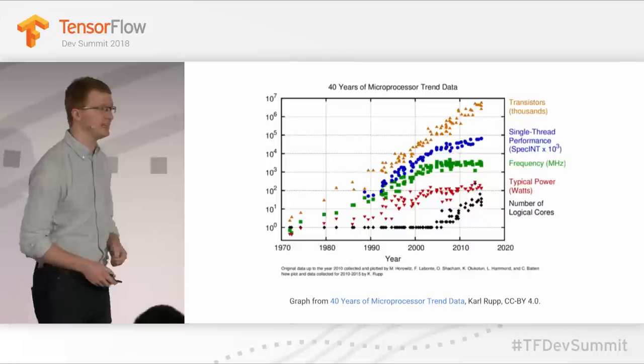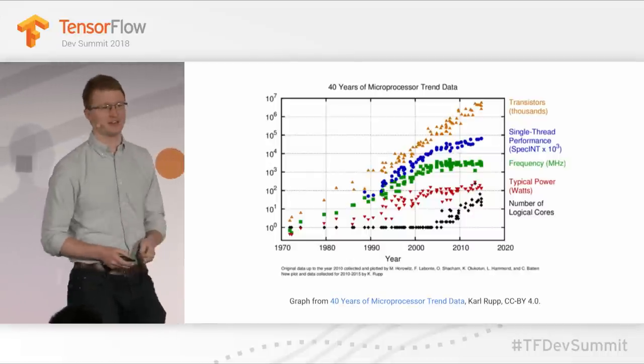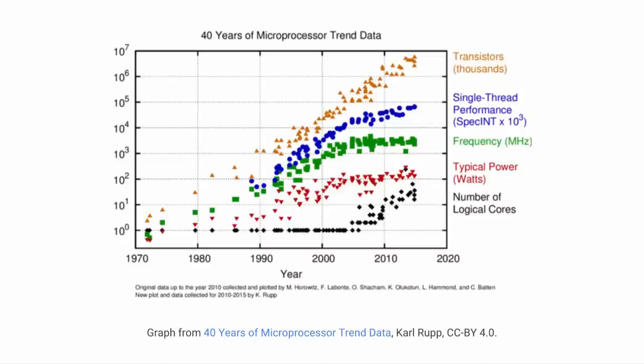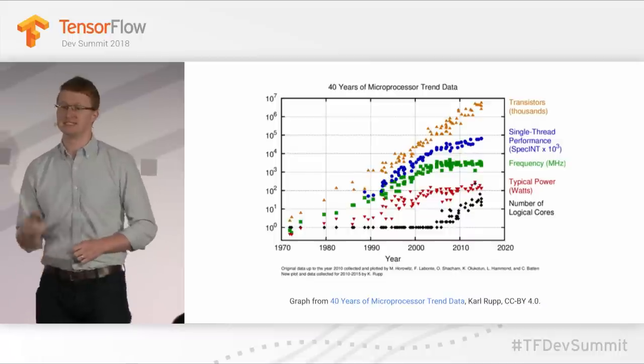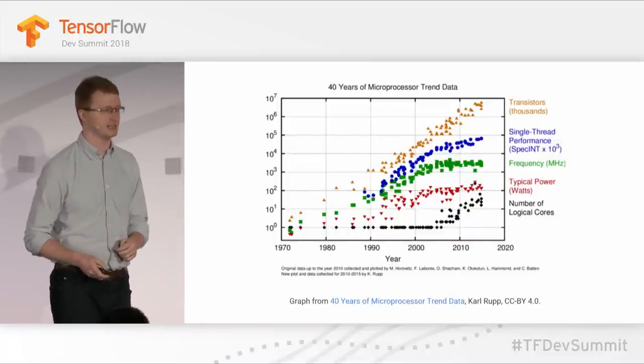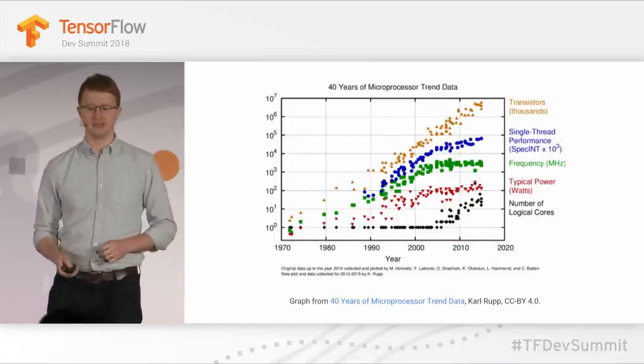Unfortunately, we're running into quite the obstinate adversary: physics. Here's a graph of microprocessor trend data over 40 years, and we can see that clock frequency has entirely hit a wall. Single-threaded performance is not getting that much faster compared to how it used to. We're going to have to work a lot harder to meet the challenges of today and tomorrow. Silicon itself is not going to get us there without a little bit of cleverness.